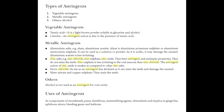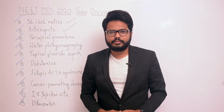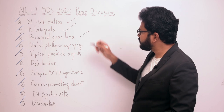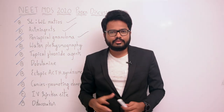Various vegetable and metallic astringents exist. Vegetable astringents include tannic acid and catechu. Metallic astringents include aluminum salts, zinc salts, ferric chloride, silver nitrate, etc.